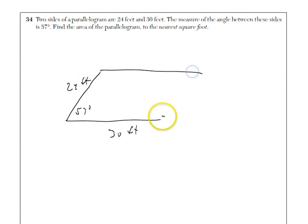Question 34. Two sides of a parallelogram are 24 and 30 feet. The measure of the angle between, and they want the area of the parallelogram. Interesting question. We have 30, we have this 57 degree angle, this is 24 feet. And they want to know the area of the parallelogram. Well, the area of a parallelogram is base times height. Now, the base is 30, but the height is not 24.